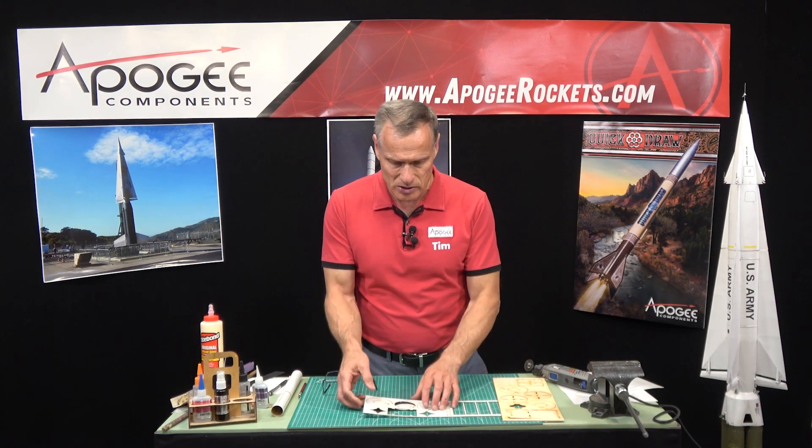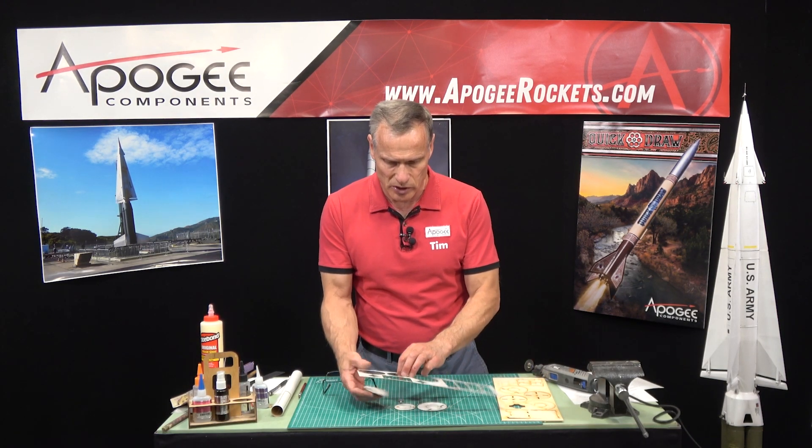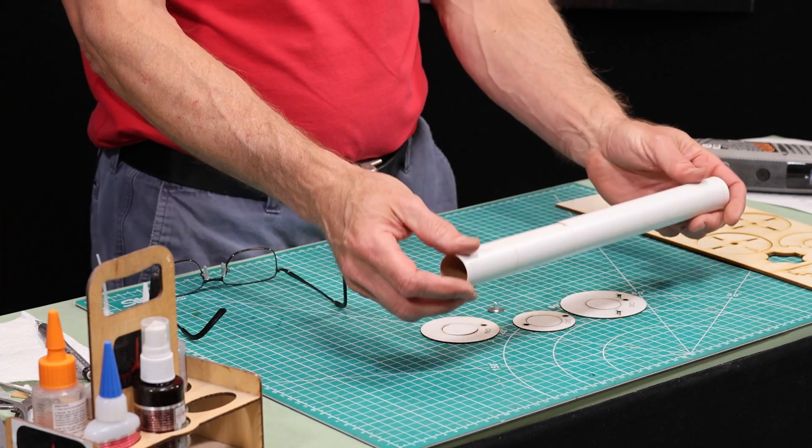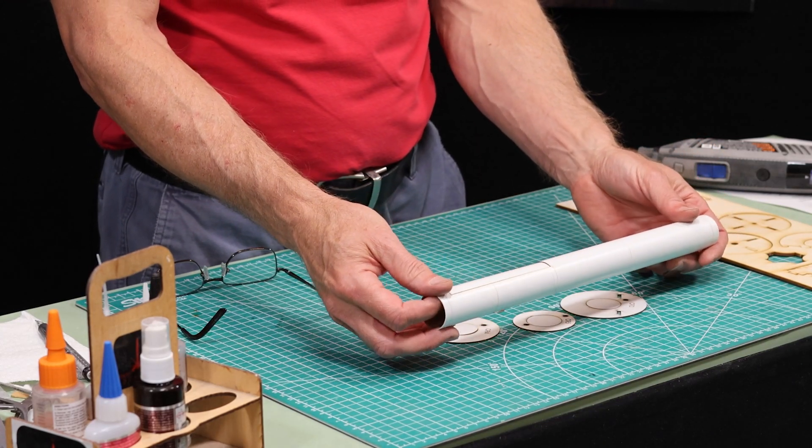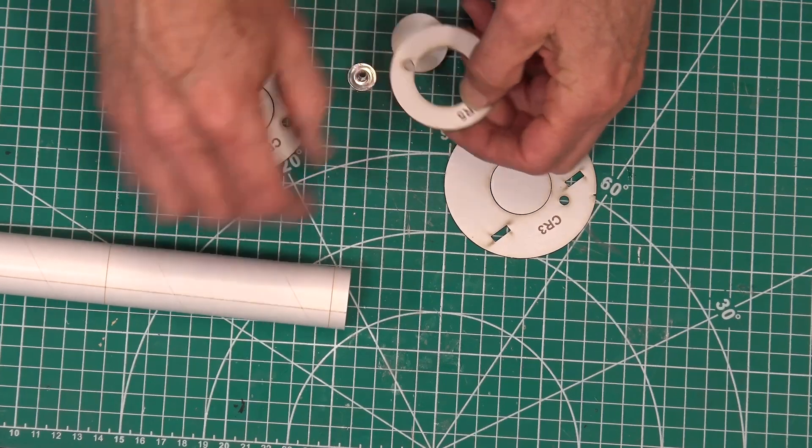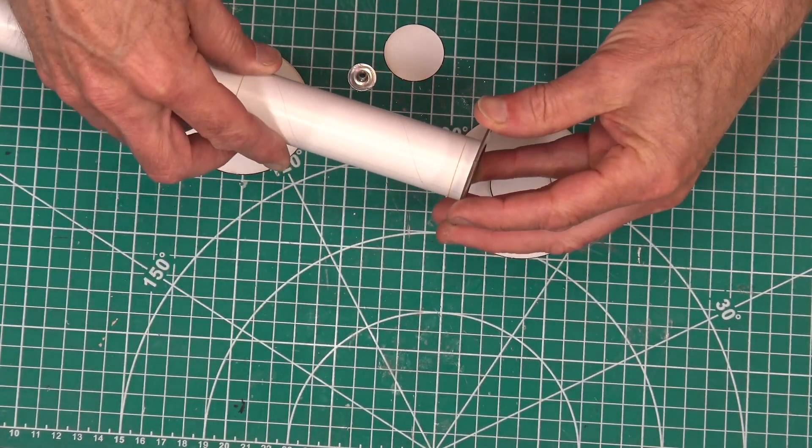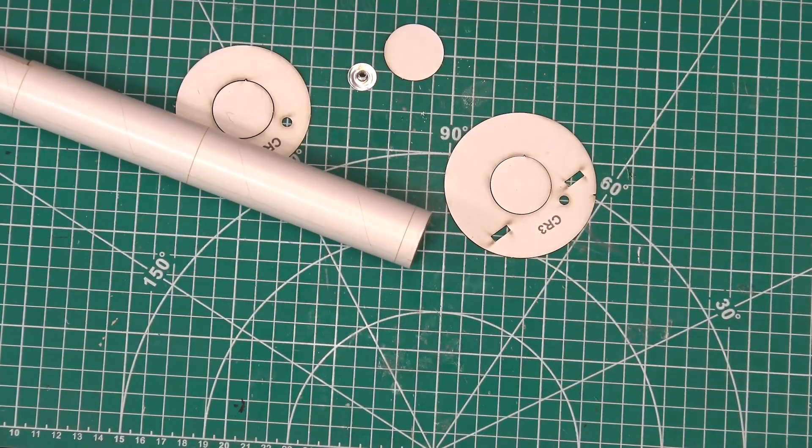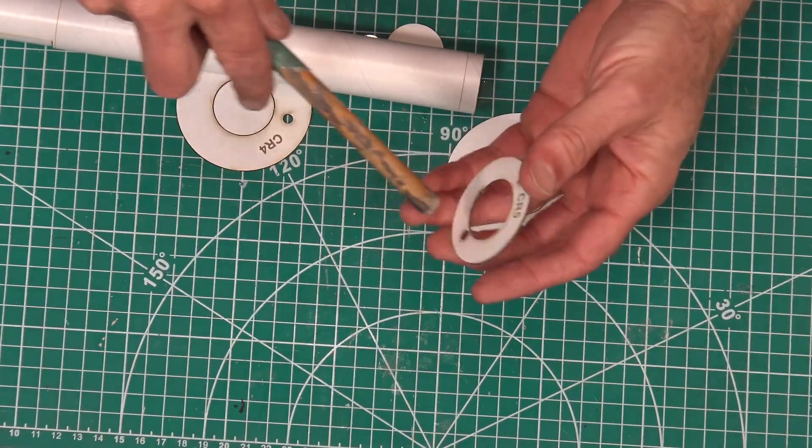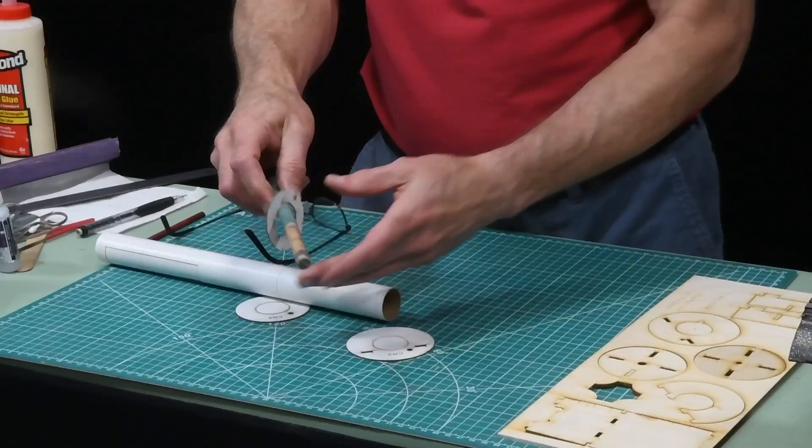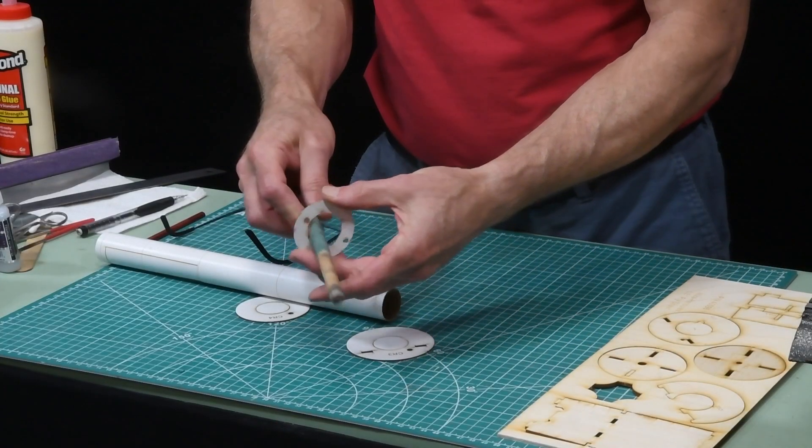The important thing is once you start removing these rings, you're going to take the engine mount tube for the upper stage and mine is a little bit tight, so you want to make sure you sand these so that they slide on easily. Go ahead and do that at this point. You might as well do all of them, it just saves you some time.